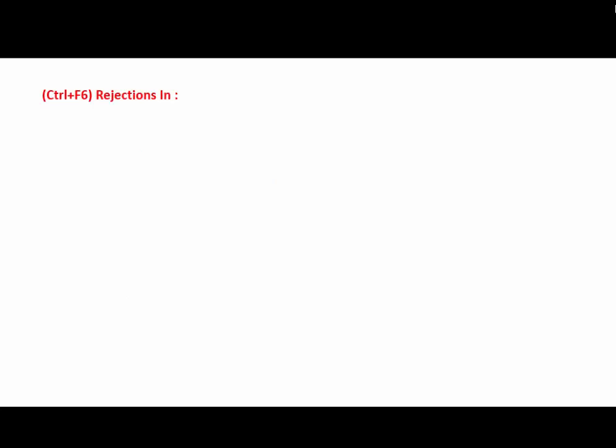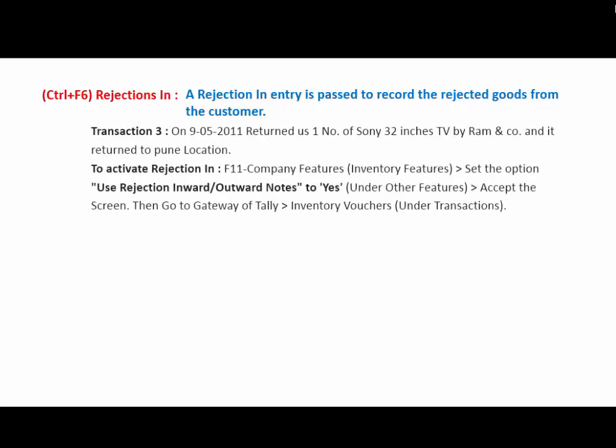Next one is CTRL+F6, that is Rejection In. This voucher type is used for a rejection entry to record the rejected goods returned from the customer — it means Sales Return. When goods are sold and some goods are returned from the customer, then an entry will be made in the Rejection In voucher type. For example, on 9th May, 1 unit of Sony 32-inch TV was returned by Ram & Company and it was returned to Pune location. For making the rejection in voucher type, press F11 Company Features and set Use Rejection Inward/Outward Note to Yes, under the heading Other Features, and then make the entry into Rejection In voucher type.